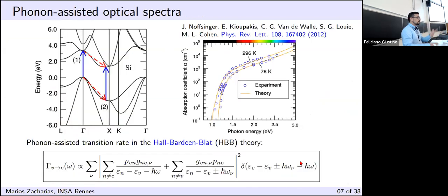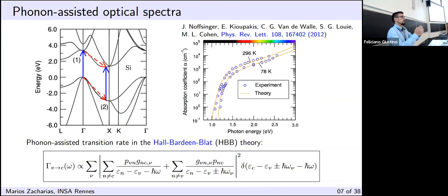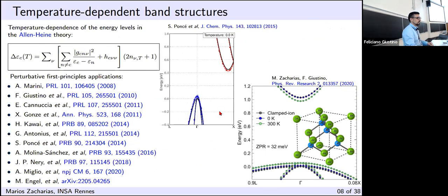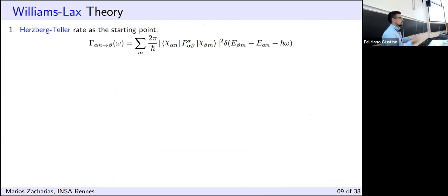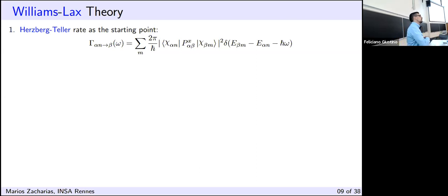If we could have a method that incorporates band gap renormalization — this energy level renormalization — inside the delta function, we could capture precisely the correct absorption onset, since the band gap closing leads to a redshift of the spectra without needing an empirical shift. We looked in the literature for a method that can incorporate both phonon-assisted transitions and energy level renormalization. This is the Williams-Lax theory, also the starting point of our special displacement method.